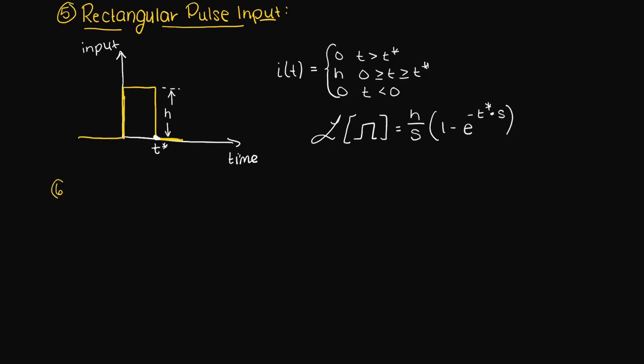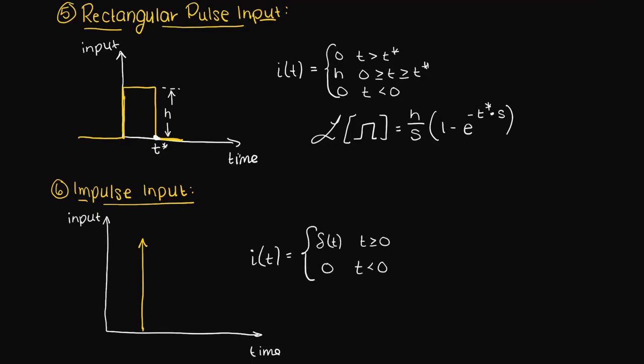We could also have an impulse input, which is a hypothetical scenario in which our input is extremely high at one exact instant but zero everywhere else. This is not achievable in practice, but we can try to approximate it the best we can. This is also sometimes called the Dirac delta function.